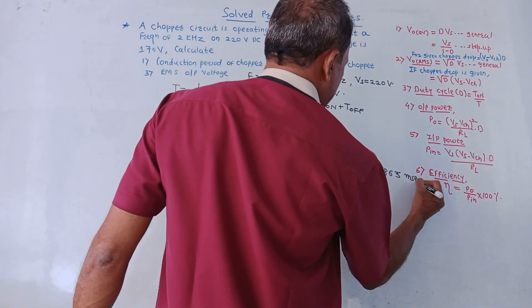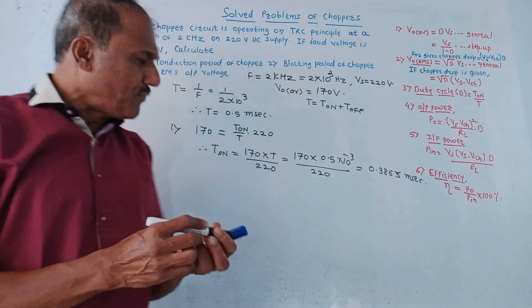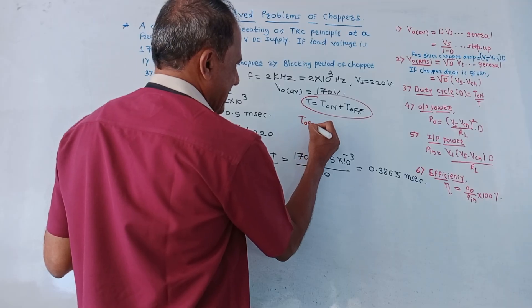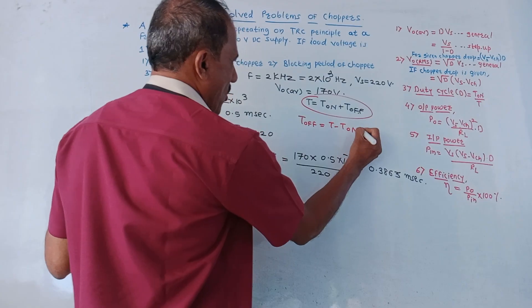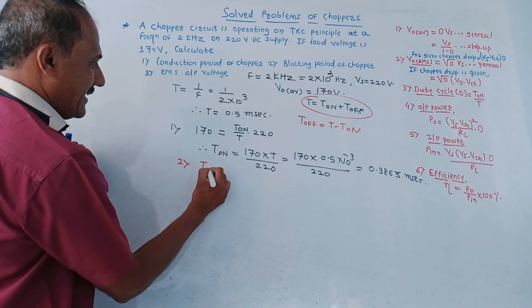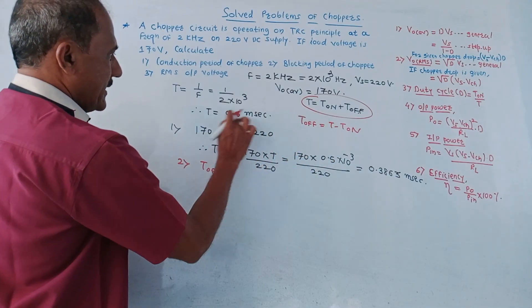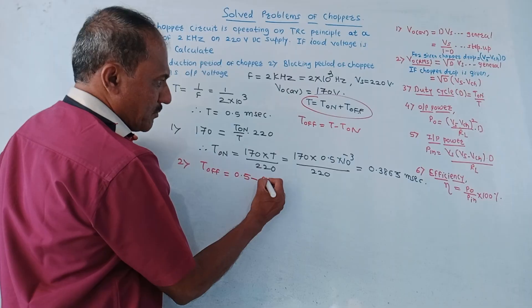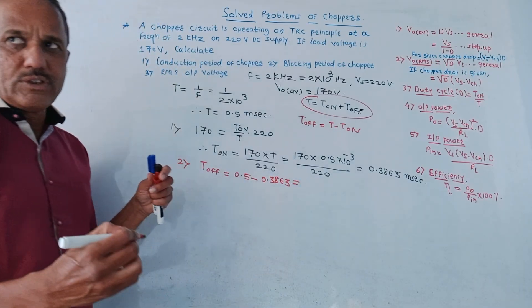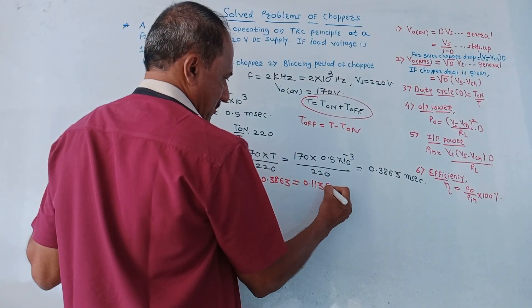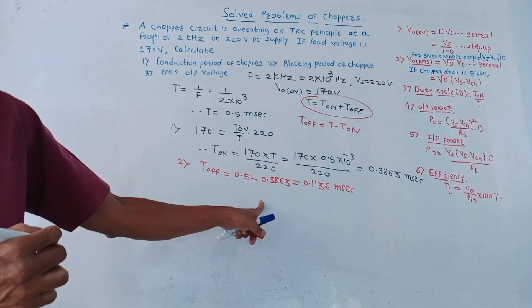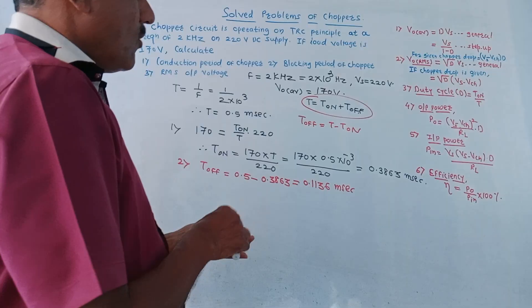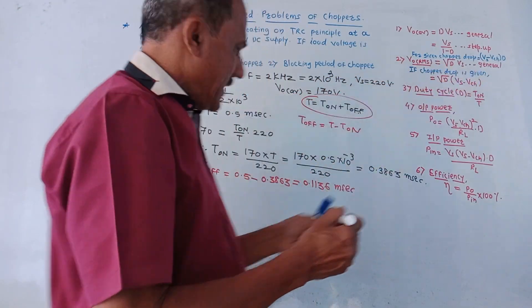This is the answer for on time period. For the second part — blocking period means off time period. Total time period is Ton plus Toff, so Toff equals T minus Ton. Therefore Toff equals 0.5 milliseconds minus 0.3863 milliseconds, which gives 0.1136 milliseconds. This is the answer for the blocking period. Now for the third part: RMS output voltage.